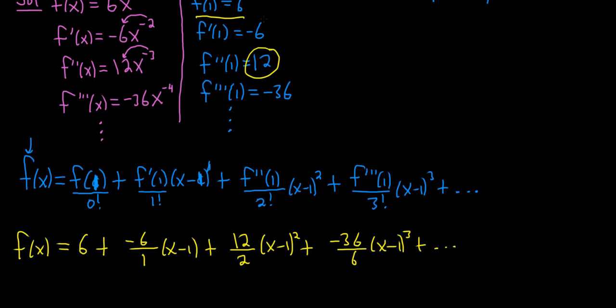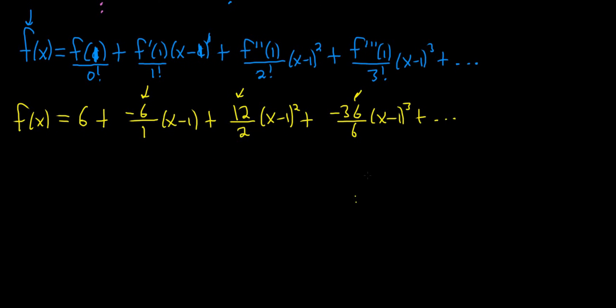Let me just double check that. So f prime of 1 is negative 6, looks good. f double prime of 1 is 12, looks okay. f triple prime of 1 is negative 36, looks okay. 2 factorial is 2, 3 factorial is 6. Okay.